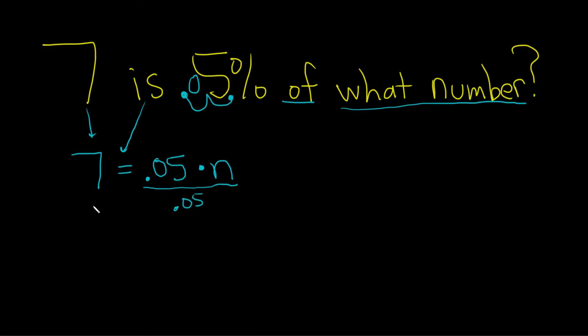And what you do to one side, you do to the other side in math as well. So you put it over here. So these cancel. And if you put this in your calculator, 7 divided by 0.05, you get 140.